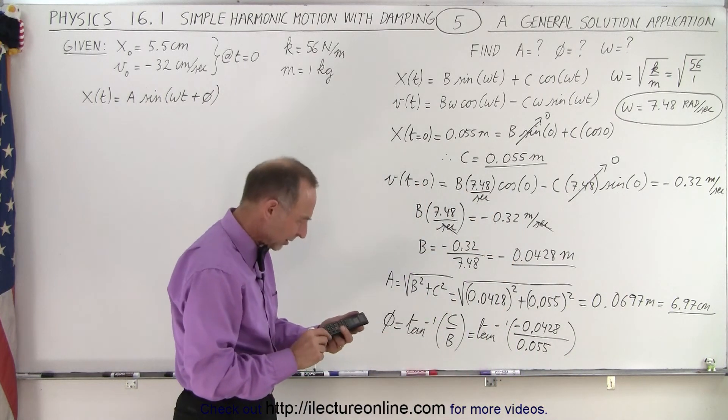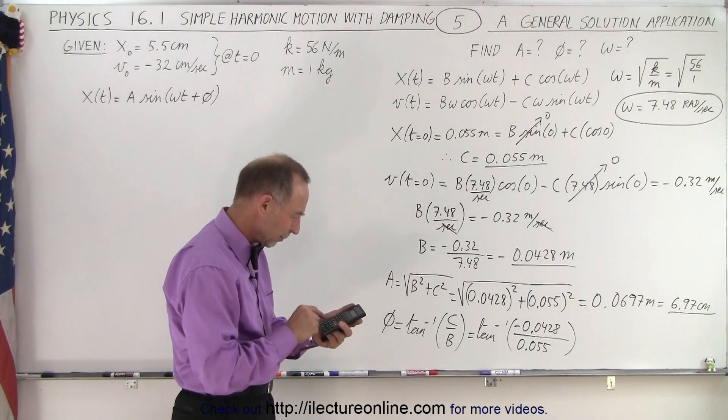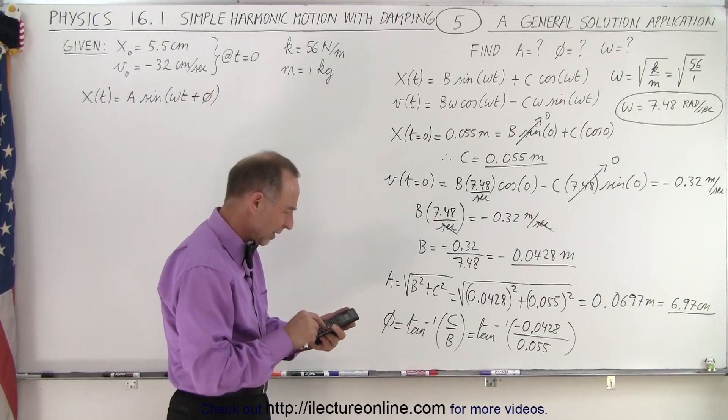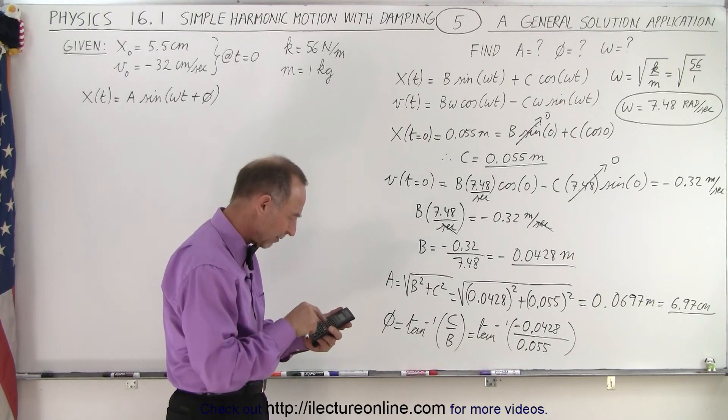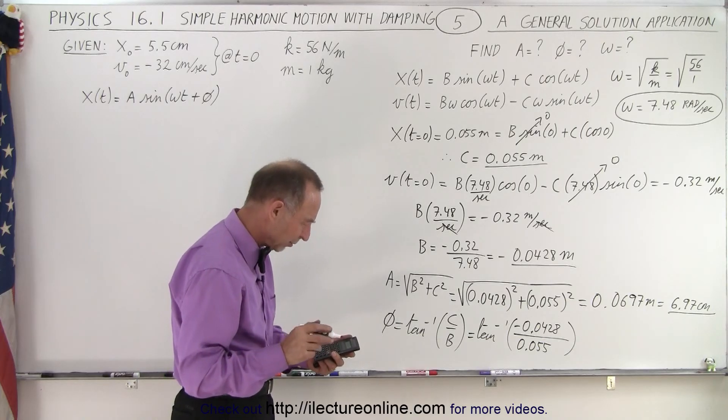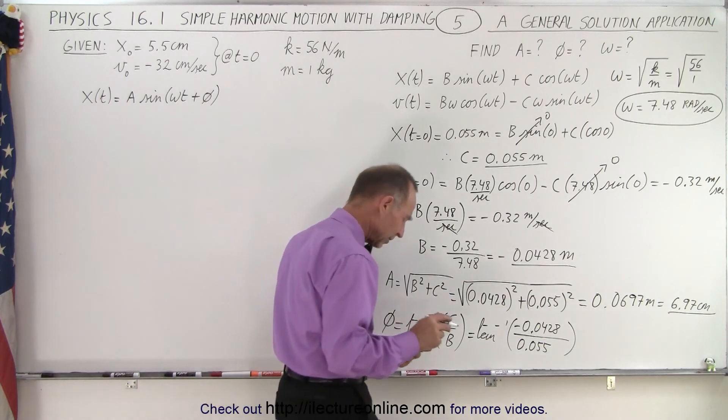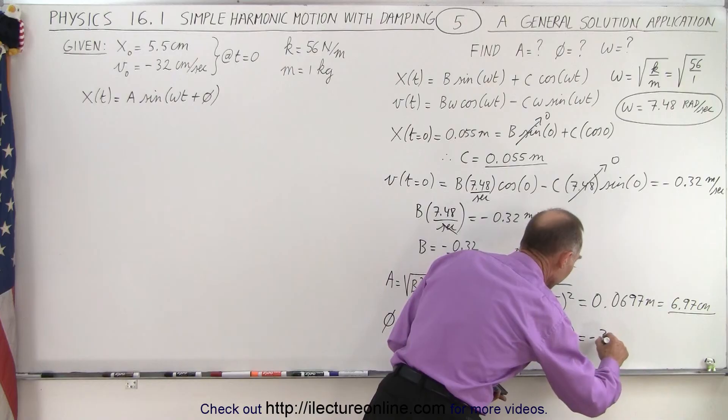Looks like that might be a negative phase angle. 0.0428 divided by 0.055, that's the negative inverse tangent, that's minus 37.9 degrees. So there's our phase angle.